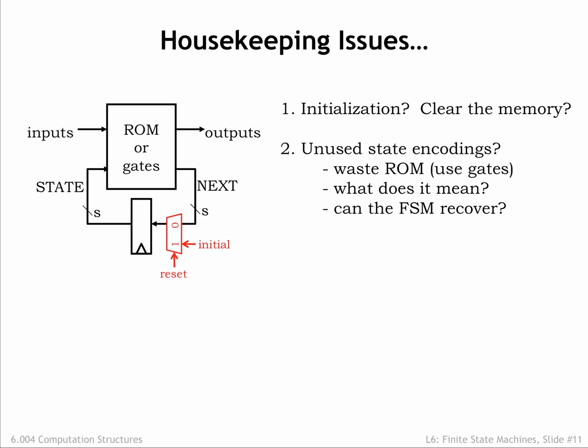In our example, we used a 3-bit state encoding, which would allow us to implement an FSM with up to 2 to the 3rd or 8 states. We're only using 5 of these encodings, which means there are locations in the ROM we'll never access. If that's a concern, we can always use logic gates to implement the necessary combinational logic instead of ROMs. Suppose the state register somehow got loaded with one of the unused encodings. Well, that would be like being in a state that's not listed in our state transition diagram. One way to defend against this problem is to design the ROM contents so that unused states always point to the initial state.